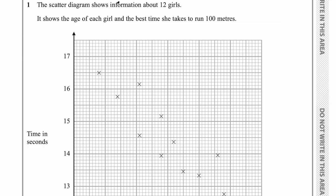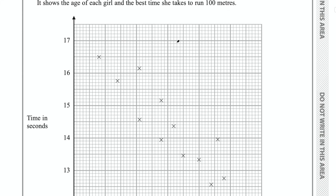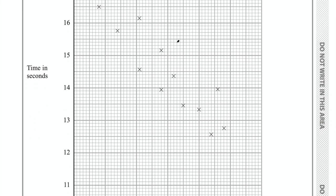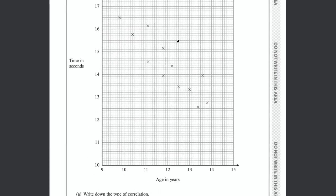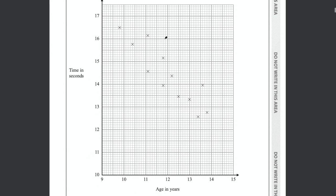Question 1 says the scatter diagram shows information about 12 girls. It shows the age of each girl and the best time she takes to run 100 meters. Here's the scatter diagram — let's zoom out a little bit so we can see the whole thing. Here are the times and here are the ages.